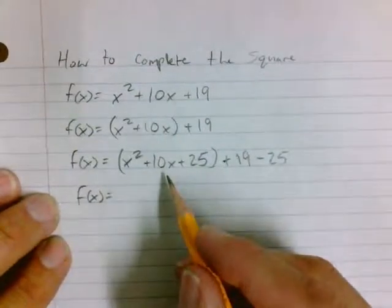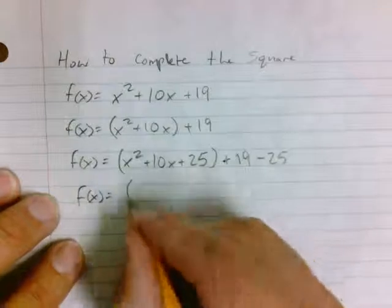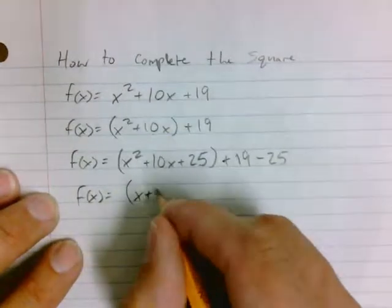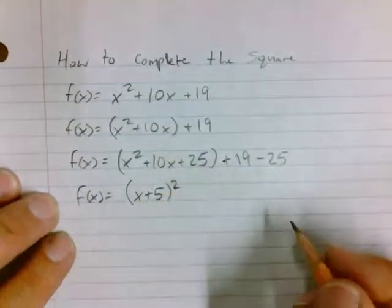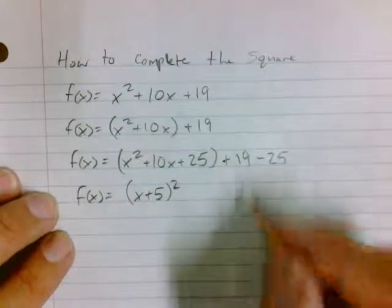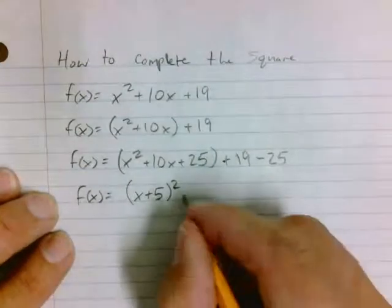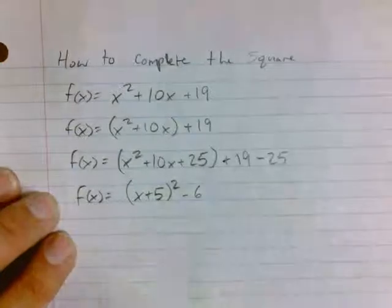Next, we're going to take the x squared plus 10x plus 25 and write that as a perfect square, followed by simplifying the outside. And 19 minus 25 is negative 6.